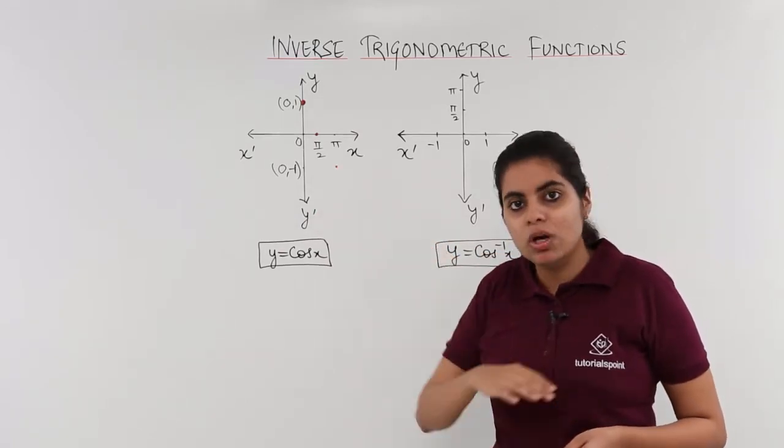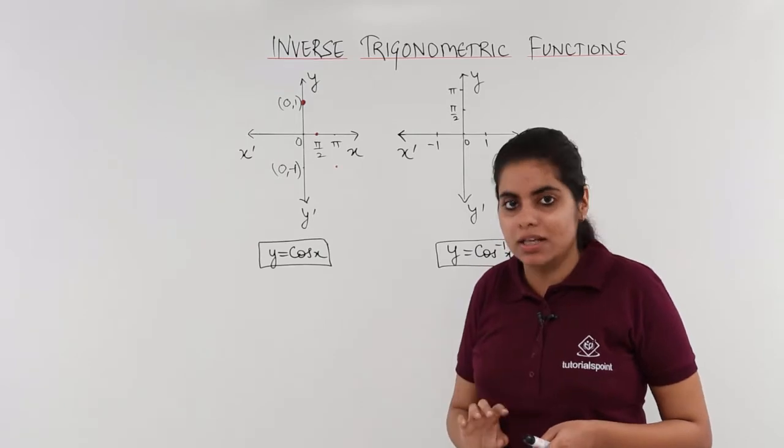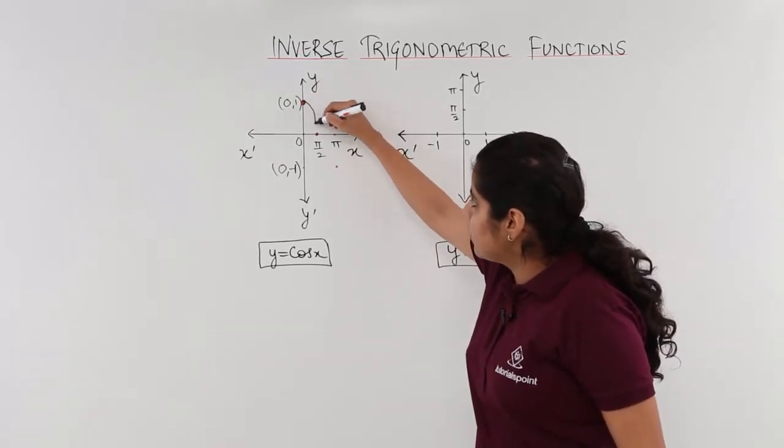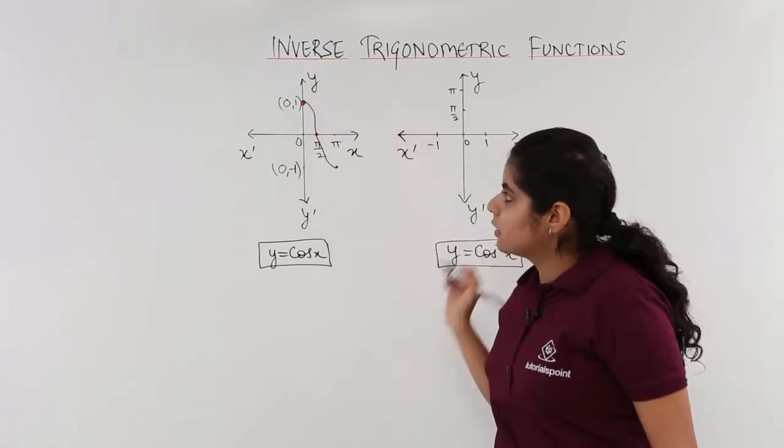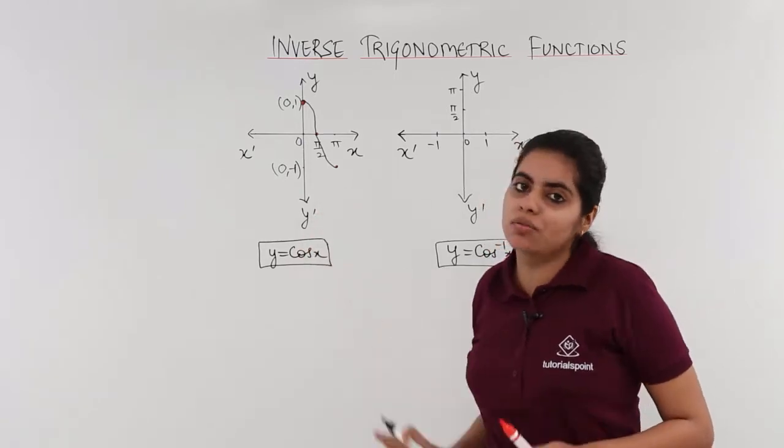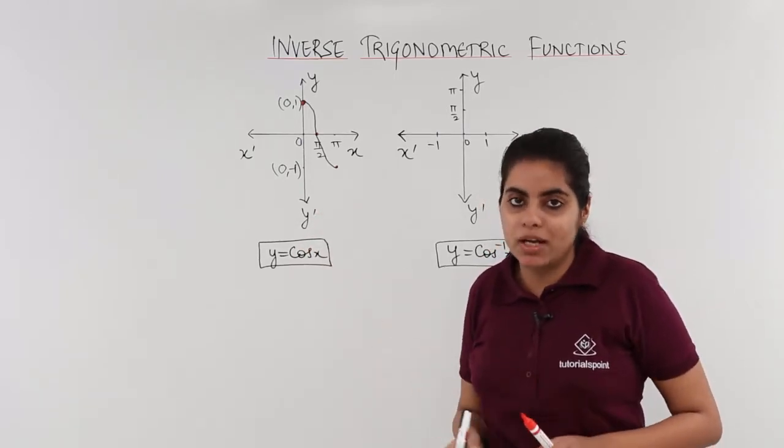Now my task is to join these dots to get a graph. Let's join and get a graph. So the graph is something like this. The graph of cos x. It is not the whole graph, just a small section of the graph. 0 to pi is the branch.